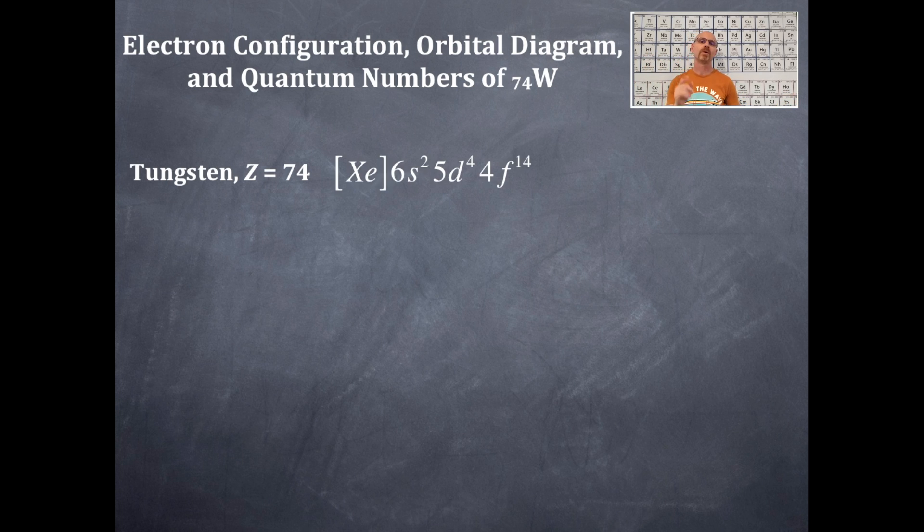There is the noble gas notation of tungsten, that is xenon in brackets, not parentheses, 6s2, 5d4, 4f14. Okay?